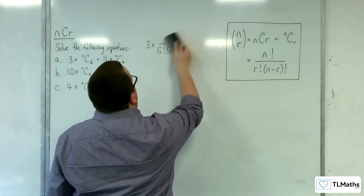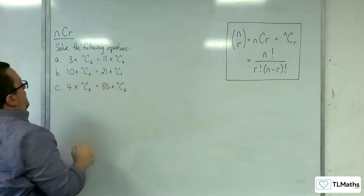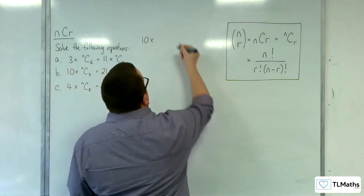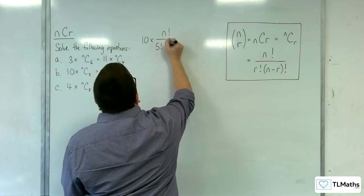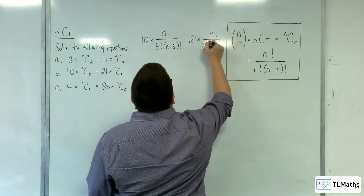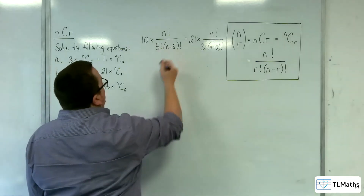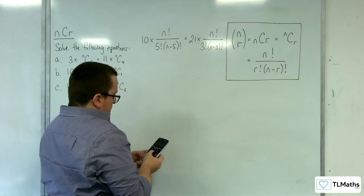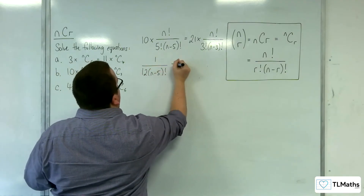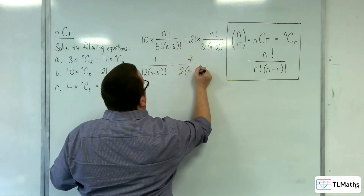Once you get the hang of this, although it looks messy, it has quite a formulaic approach. For part b: 10 times nC5 equals 21 times nC3. We have 10 times nC5 = n factorial over 5 factorial (n minus 5) factorial. Dividing both sides by n factorial and simplifying: 10 divided by 5 factorial gives 1 over 12, so we get (1/12)(n minus 5) factorial equals (7/2)(n minus 3) factorial, since 21 divided by 3 factorial is 7 over 2.